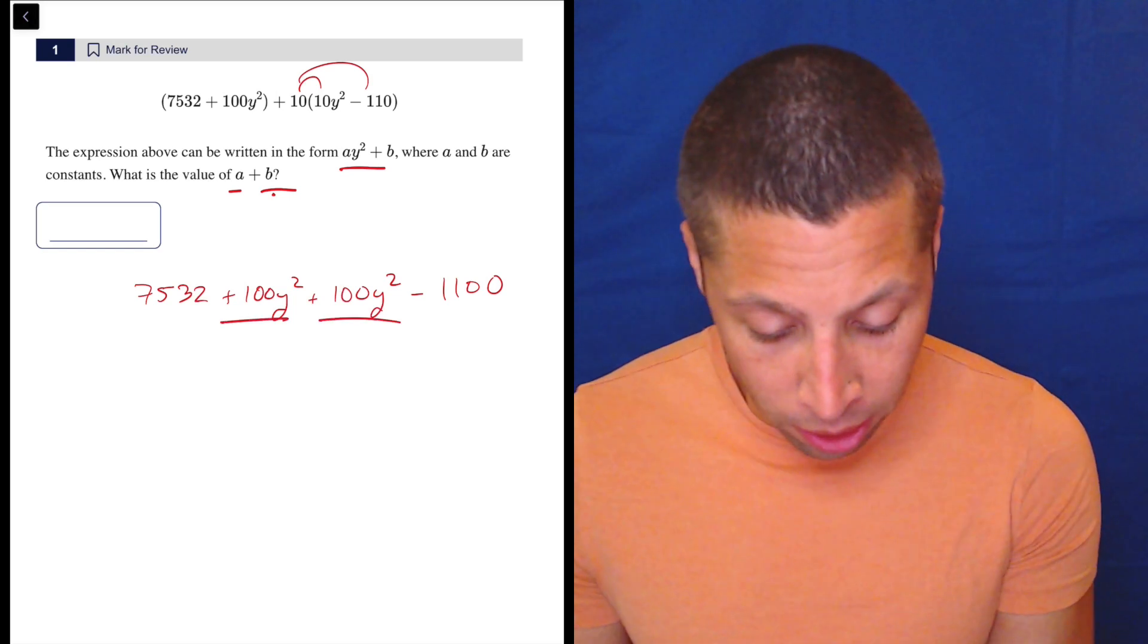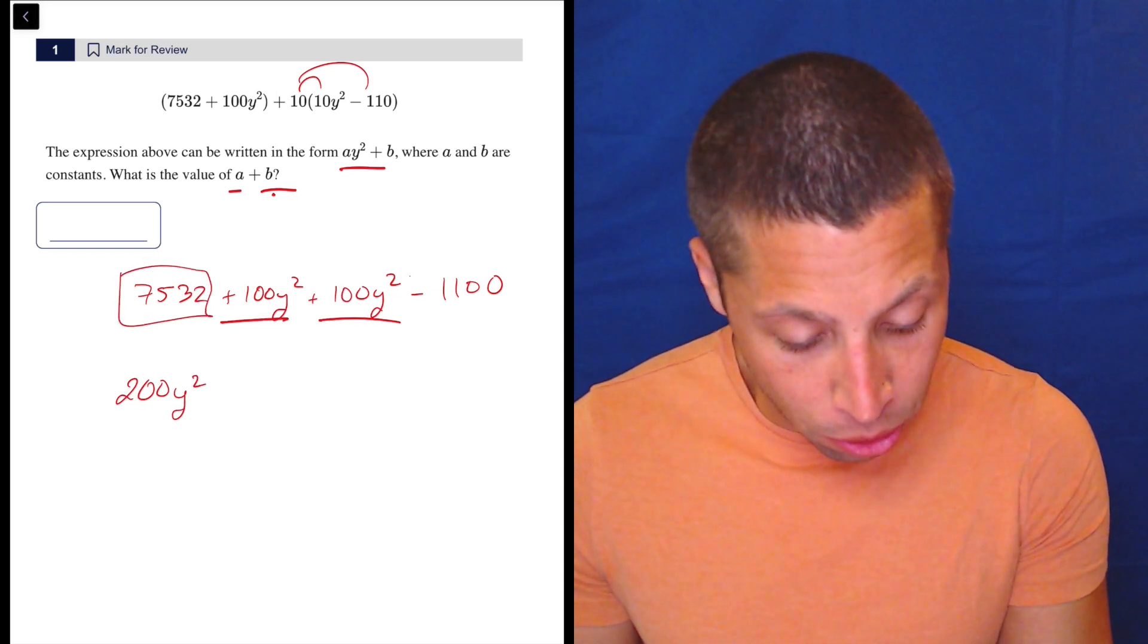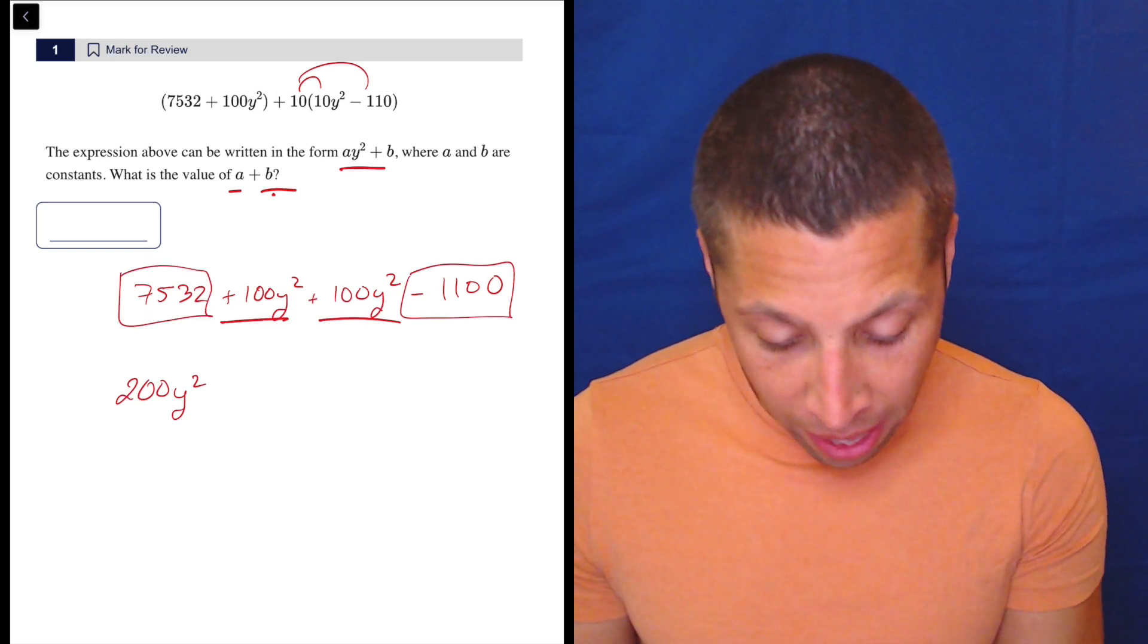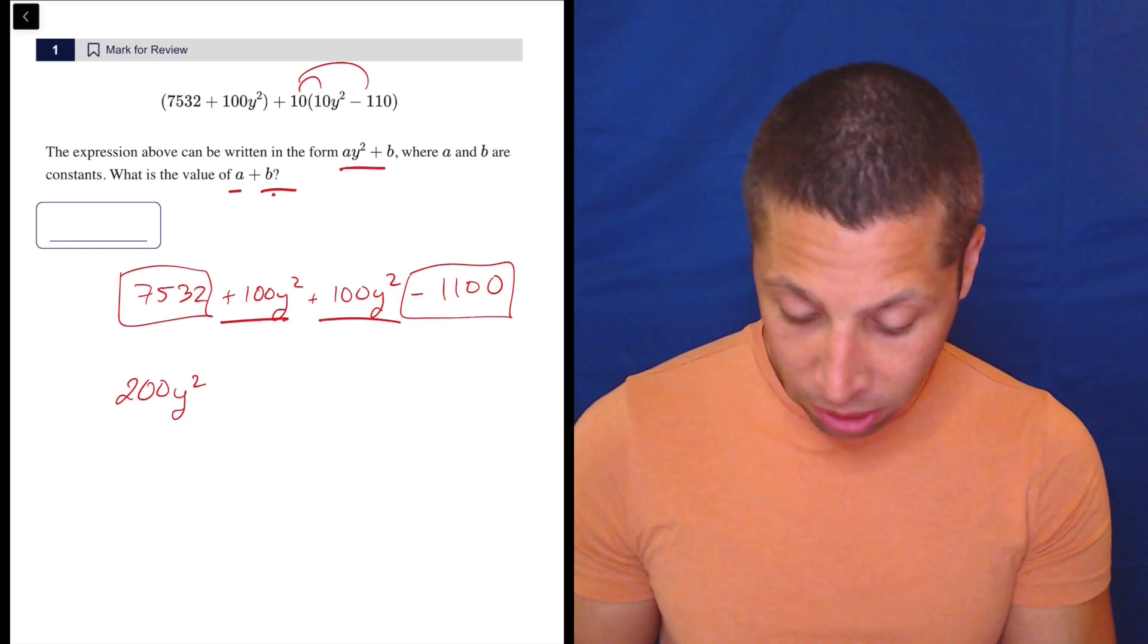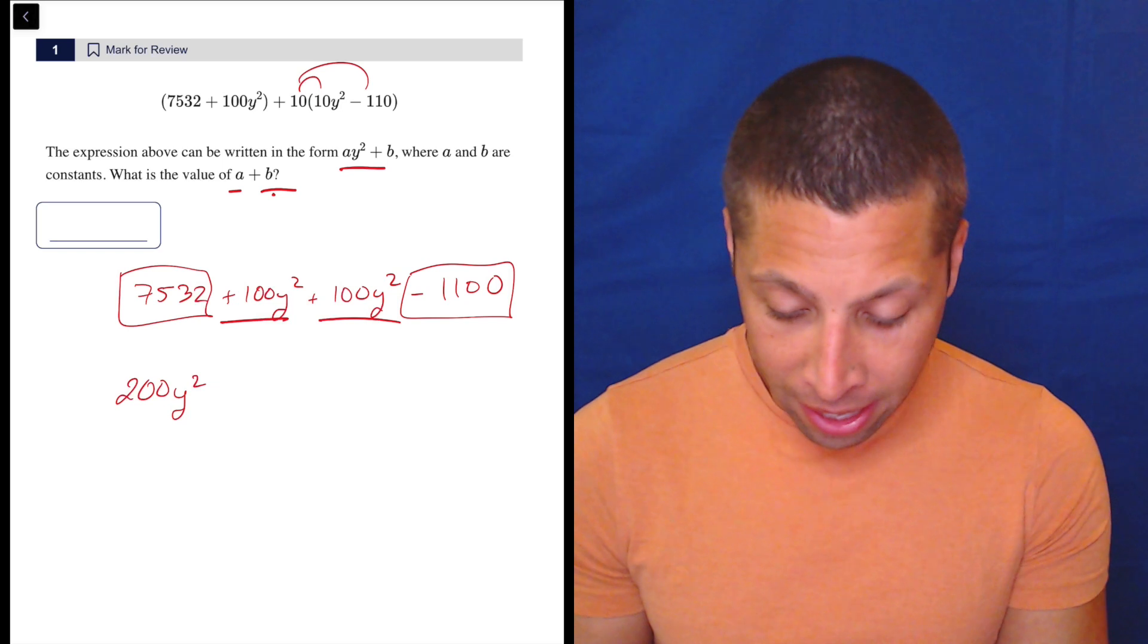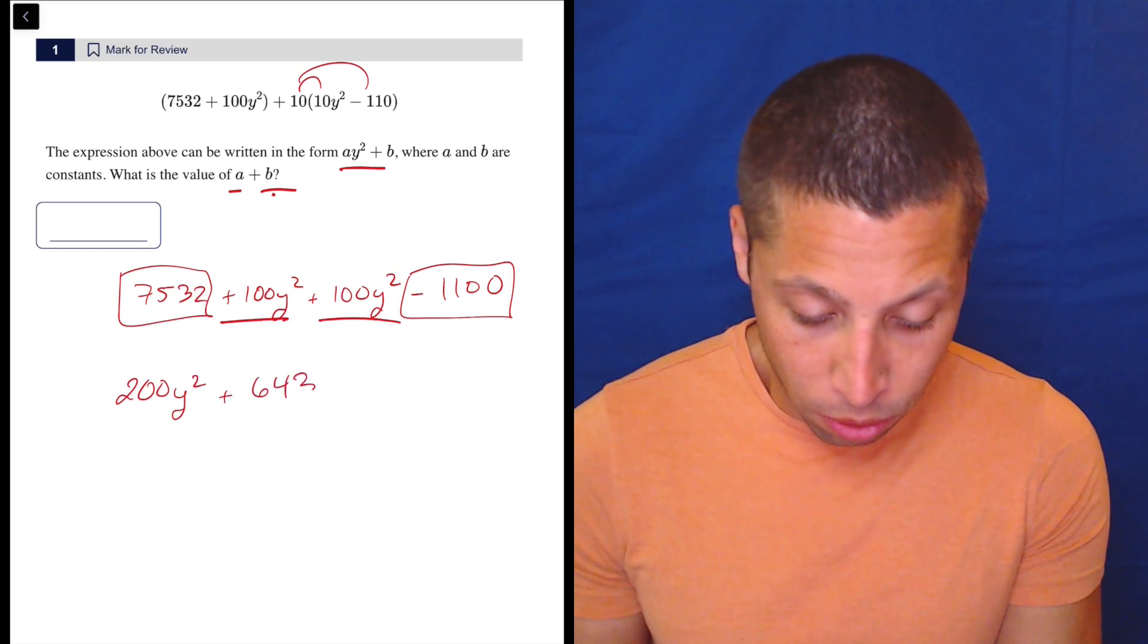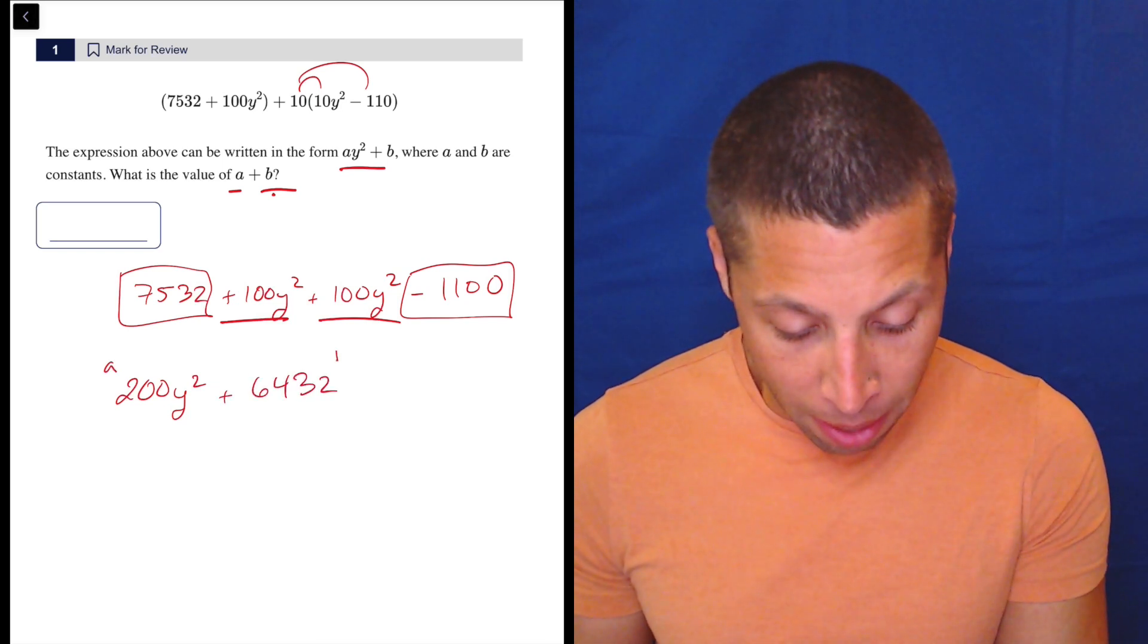So now 100 plus 100 is 200Y squared, and 7532 minus 1100. That I can also do in my head, but you know what? I don't trust myself that much. We're going to do 7532 minus 1100, and I get plus 6432. So now I have my A right here and my B right here.